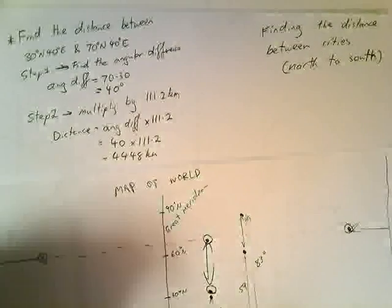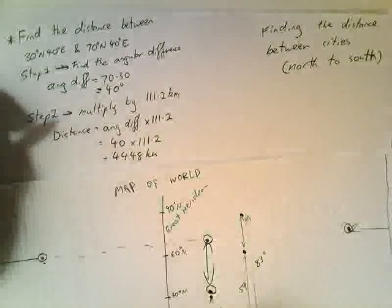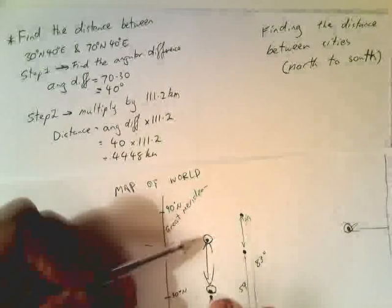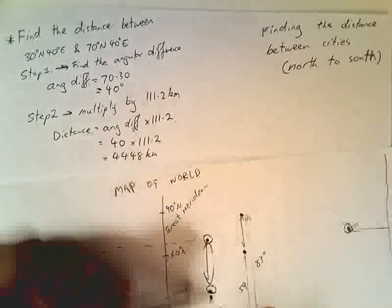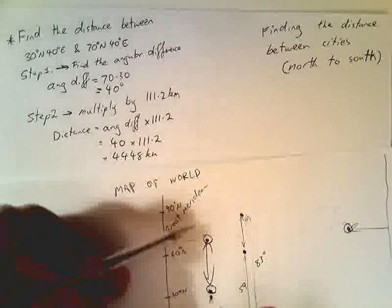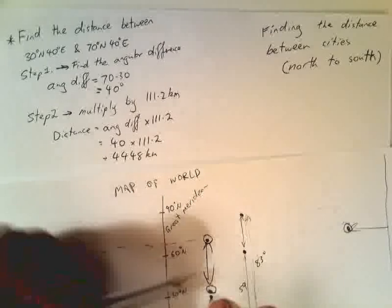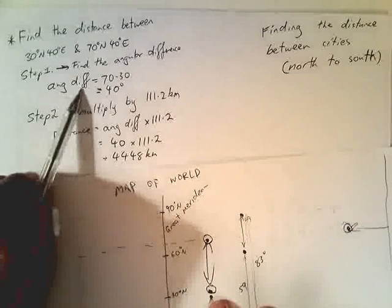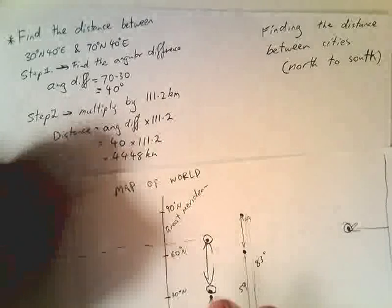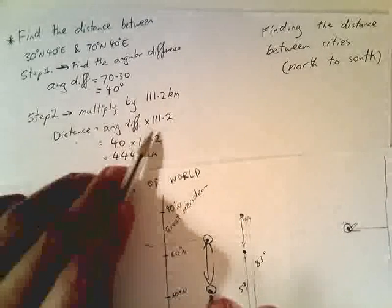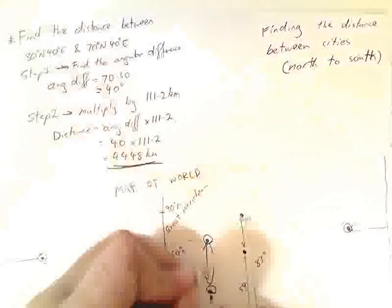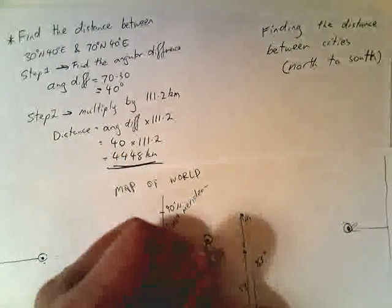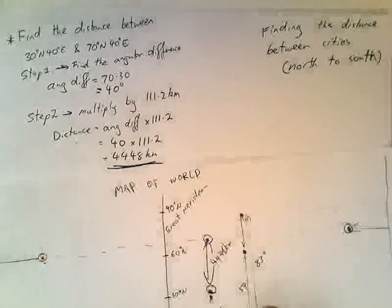So the big payoff here: as long as we know the angular difference between two cities that are north to south of each other, directly below each other, we can find the distance by first finding the angular difference, which is what we did in the last video, and then multiplying it by 111.2 to get our final answer.